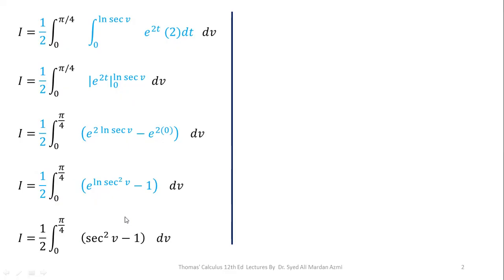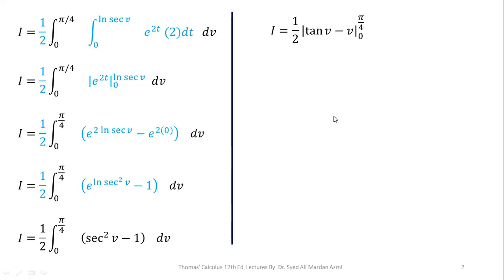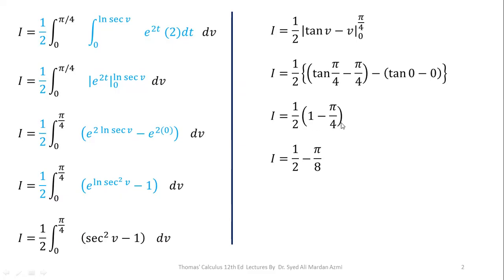In the next step, I will apply the rule of integration with respect to v. The integration of sec squared of v is tan of v, and the integration of 1 will be v. After integration, applying the fundamental theorem of calculus — upper limit minus lower limit — for the upper limit I place v equal to pi by 4, and for the lower limit v equal to 0. Now tan of pi by 4 is 1 and tan of 0 is 0, so the second bracket becomes 0. I am left with 1 over 2 into 1 minus pi by 4, which gives 1 by 2 minus pi by 8.